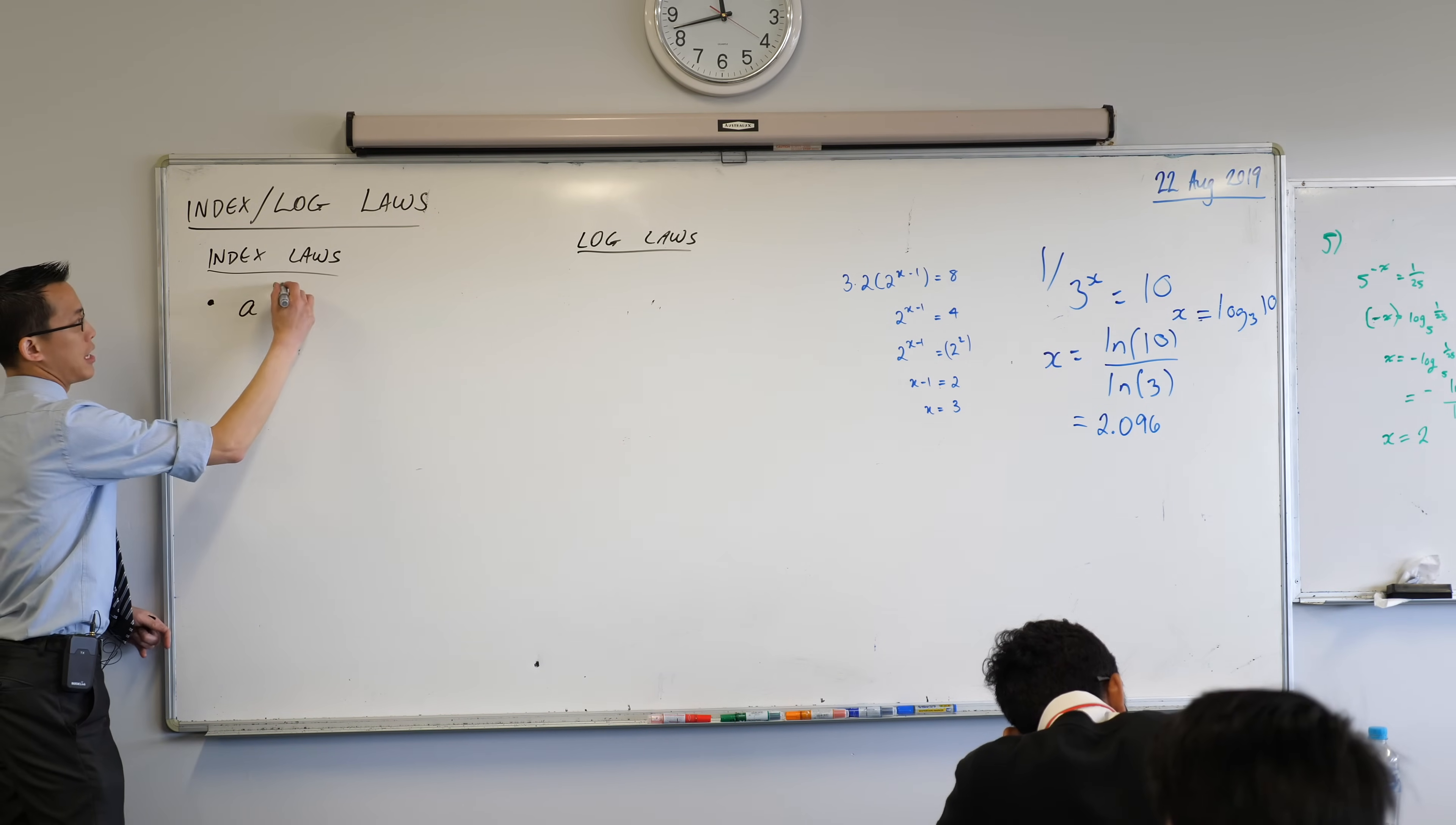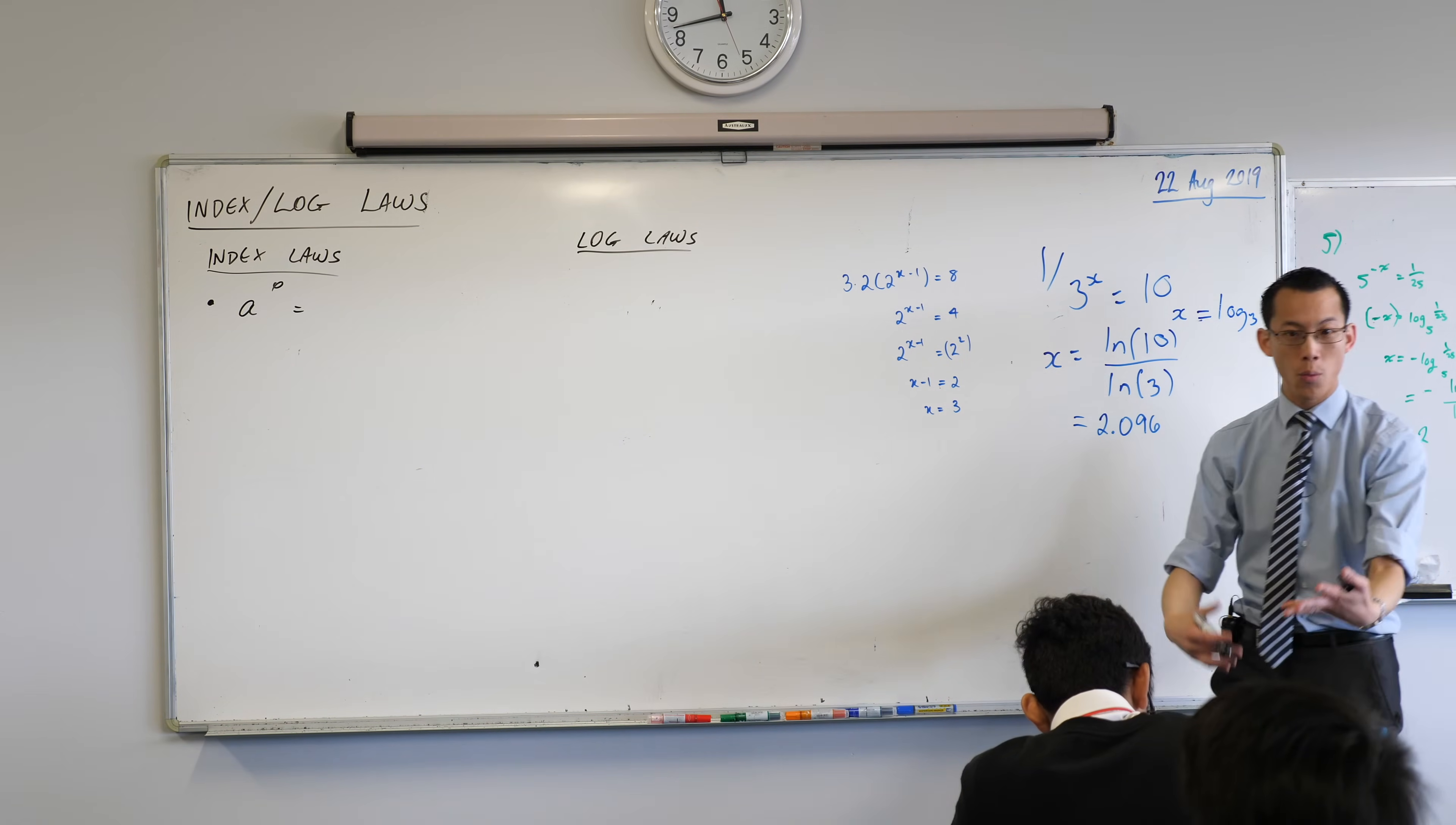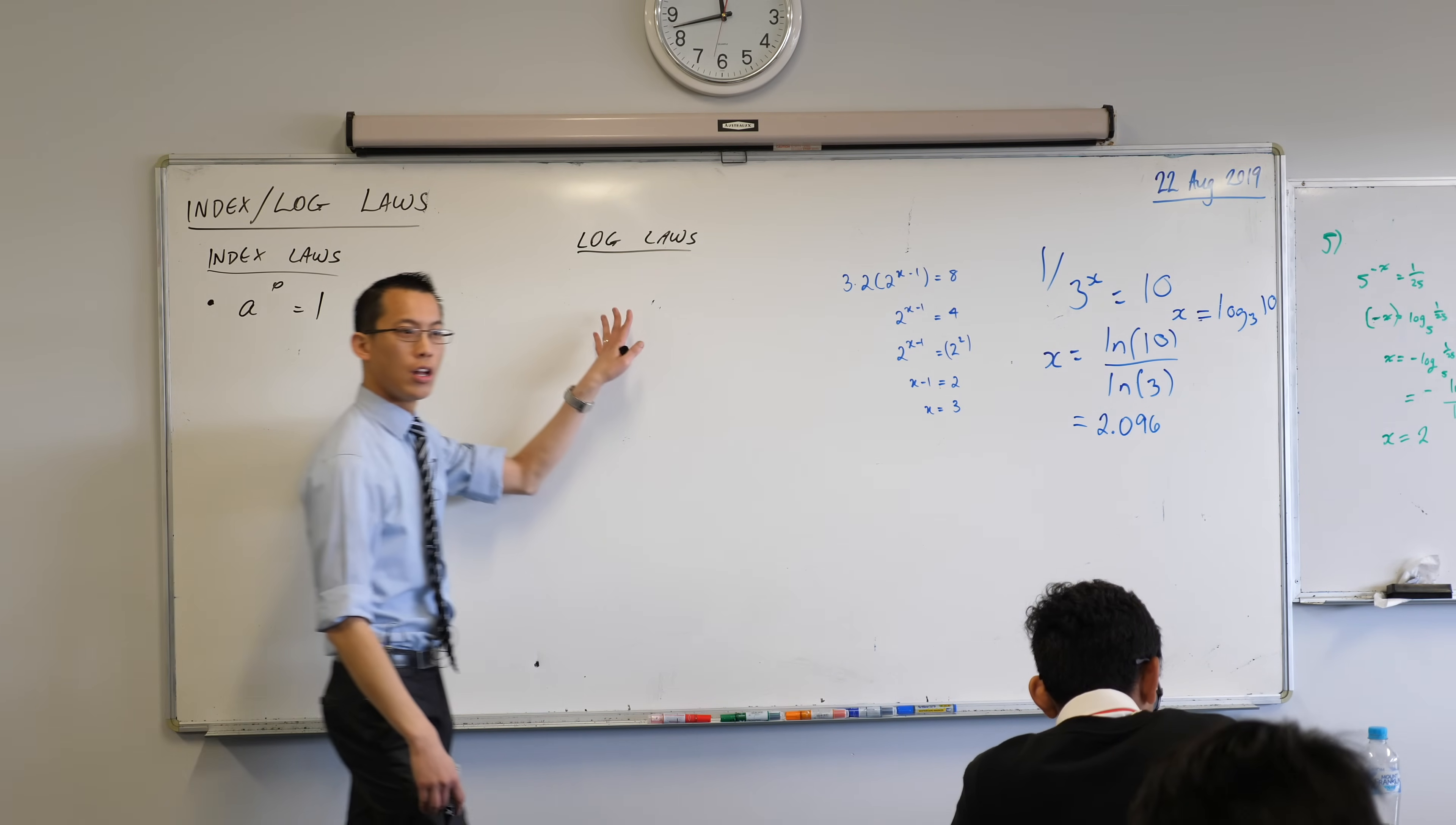So the first one I have to think about is what we call the zero index. When you take any number, I'm just saying A is any number, and you raise it to the power of zero, what's the answer? It's always one. Now this is a basic index law, and it's got an equivalent log law.